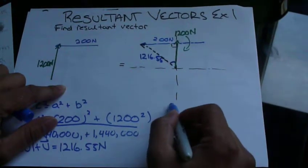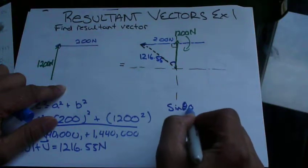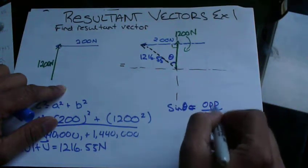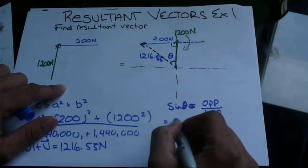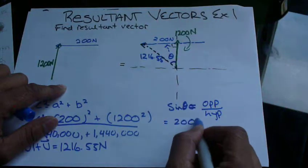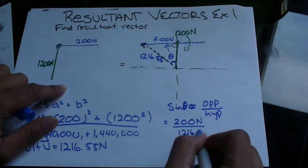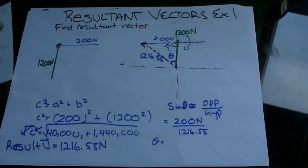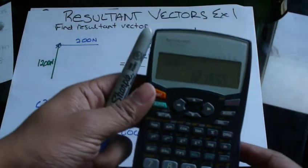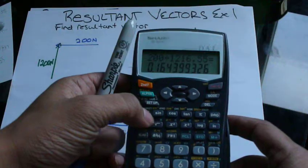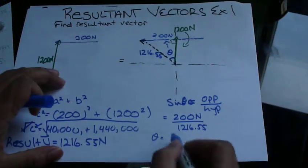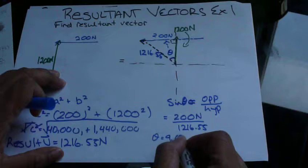So let's do sin theta equals opposite over hypotenuse. So this equals 200 newtons over 1216.55. Theta is equal to inverse sine of 200 divided by 1216.55. Remember, second function, inverse sine. We always use that when we're finding the angle. And that equals 9.6 degrees. So we could say 9.5 degrees.